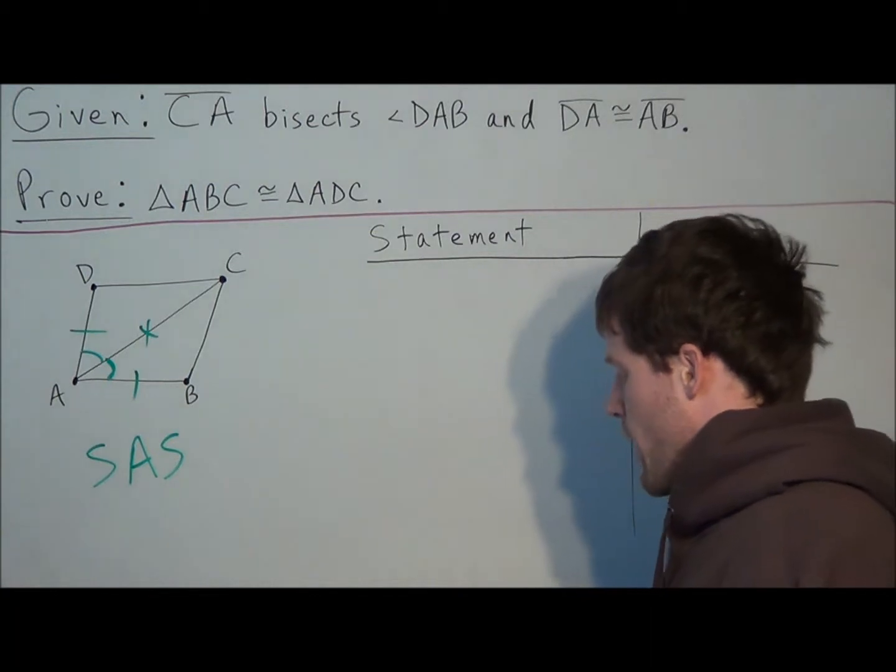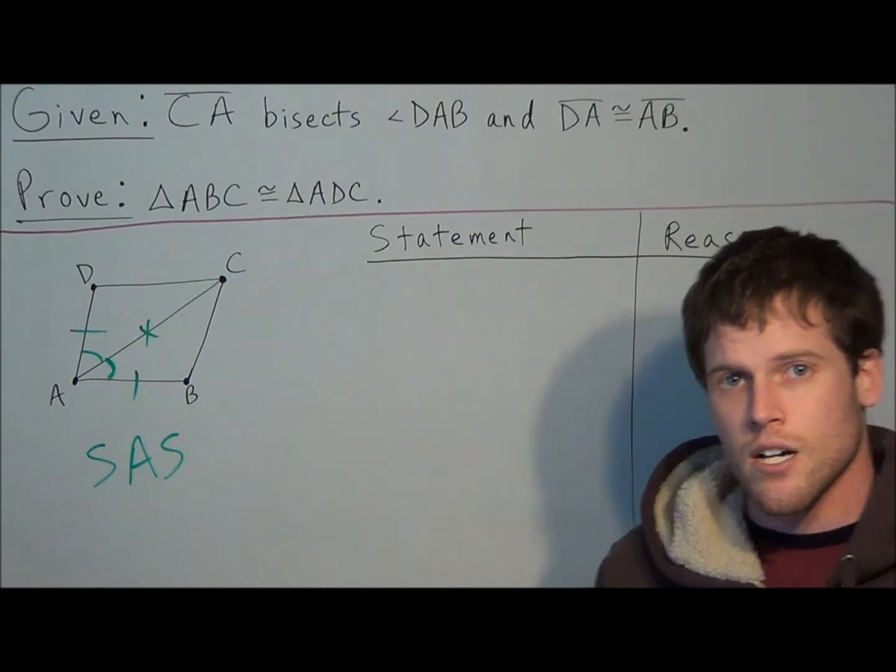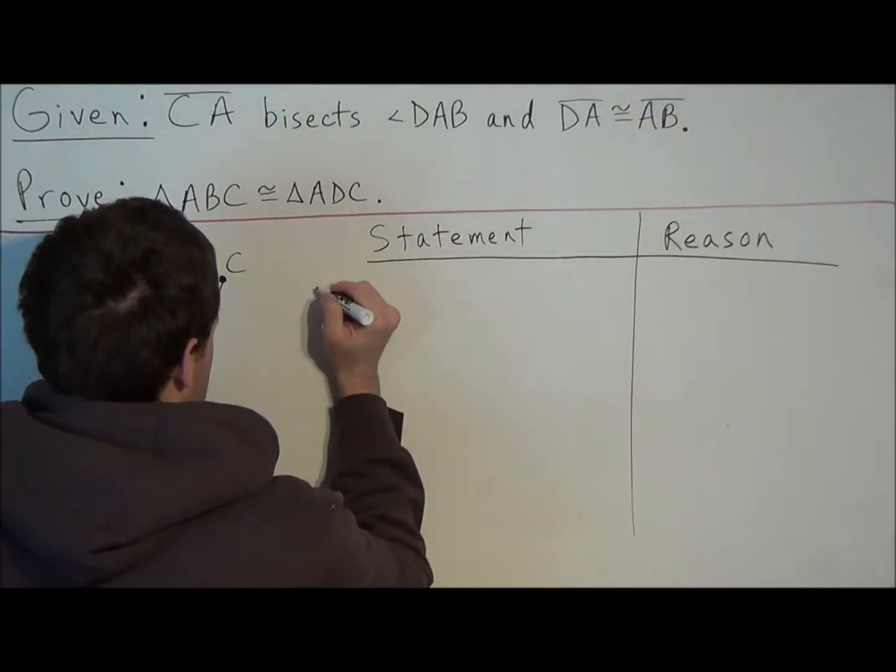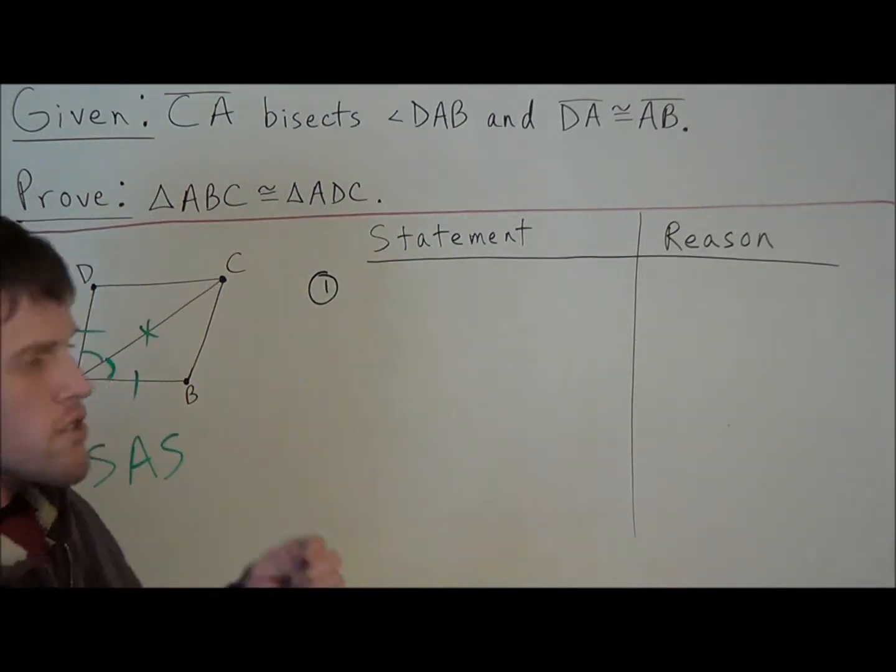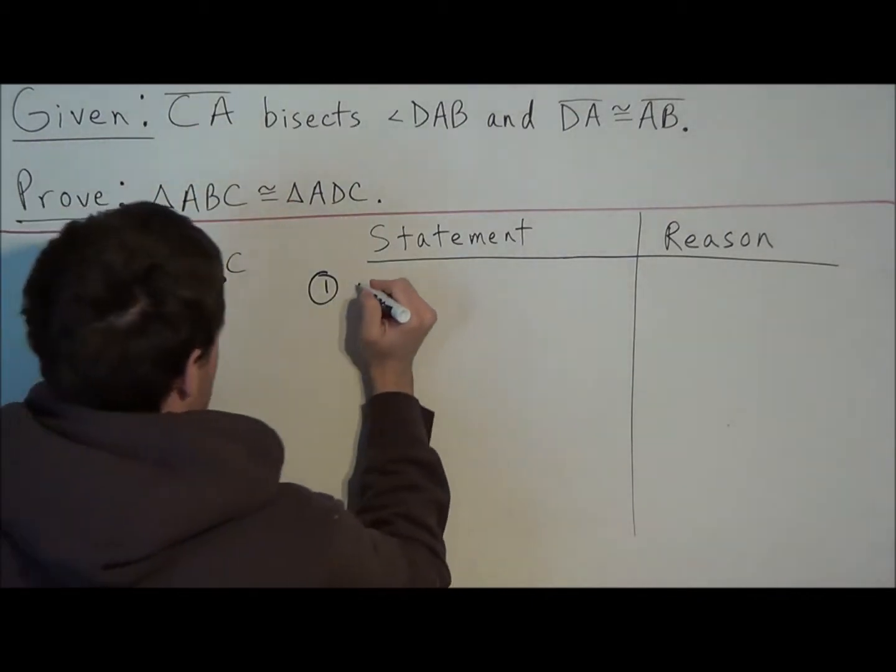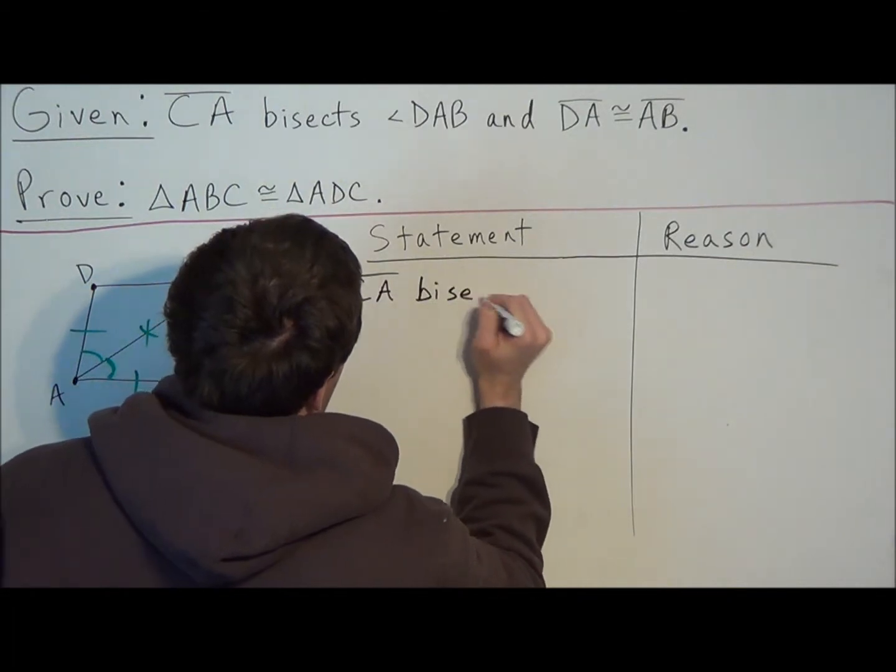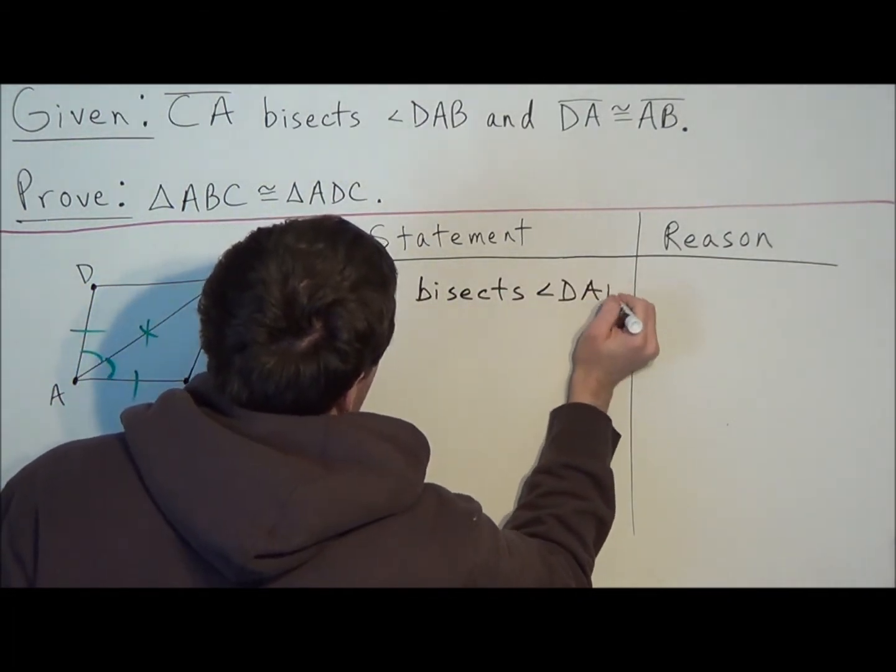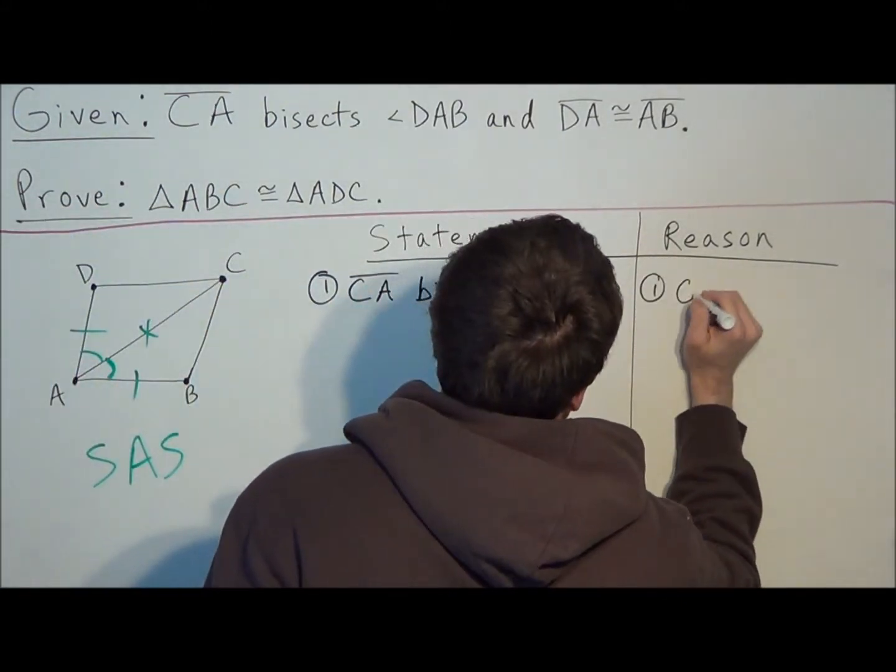That allows us to use the side angle side postulate. So once we have this strategy written down, we know we're going to use side angle side. This is going to help guide us through writing our proof. So we can start off with our statements. And just remember that the first thing you should write in all triangle proofs is the given information. So we're going to say that CA bisects angle DAB. The reason why this is true is because this is given to us.